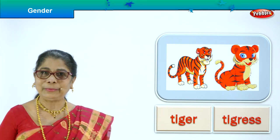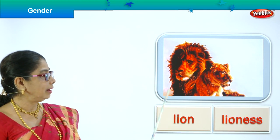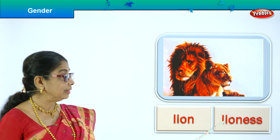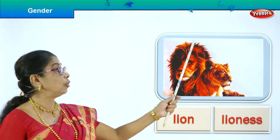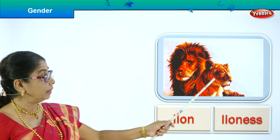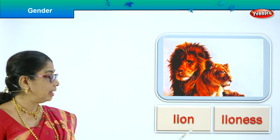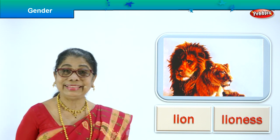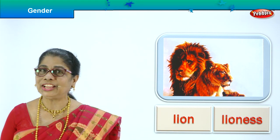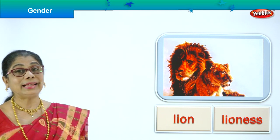Let's look at another animal and learn. Look, we have lion. The male animal is lion and the female is lioness. The one who has got a lot of hair all around is the lion — king of the jungle. The female is lioness. Lion is male, lioness is female. Lion, lioness.